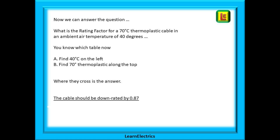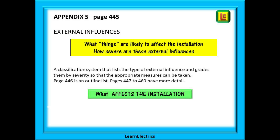This means that at 40 degrees a 10 amp cable should only be expected to carry 8.7 amps before it overheats. Appendix 5 starts with a list of all the external influences that might have an effect on an installation. Become familiar with the layout of page 446 and what is on it. If you need more information, the following pages contain more detail for each influence type.